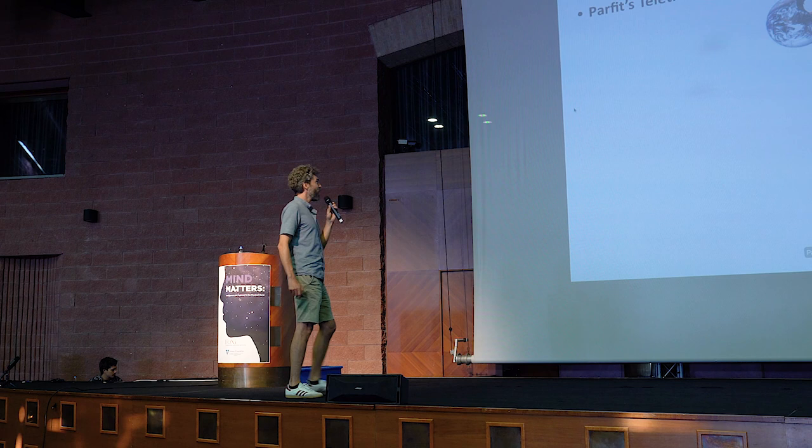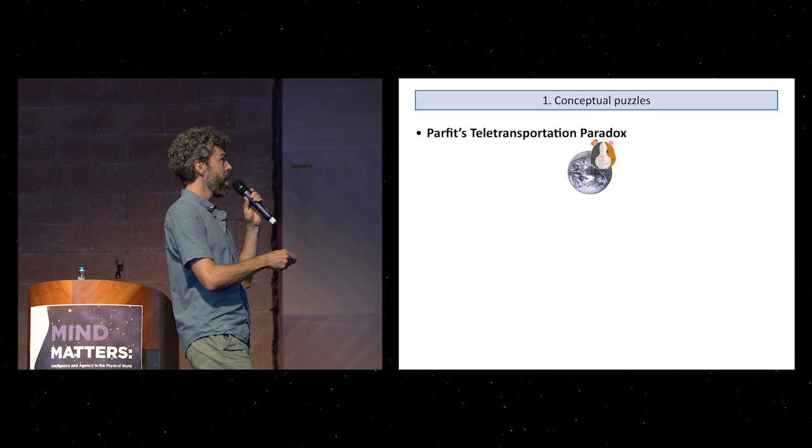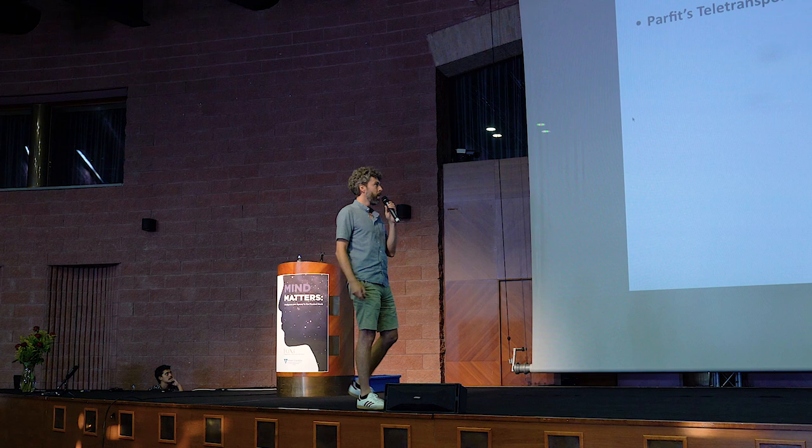Here's one puzzle, Parfit's teletransportation paradox. Imagine you're Alice the guinea pig and you live on Earth and you want to travel to Mars. But you don't do it in the usual way. You have a teletransporter. This is something you know from science fiction, a machine that basically scans you to all detail, destroys your body, sends the data to Mars, and then there's another copy of you recreated there.